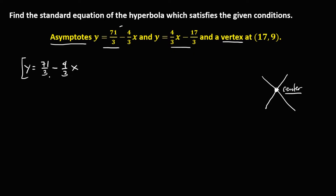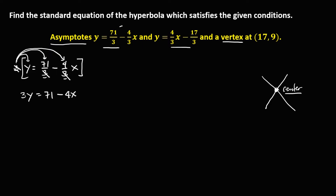We need to simplify. Since the denominators are 3, we multiply the whole equation by 3. Distributing: 3 times y is 3y, equals 3 times 71 over 3 — we can cancel the 3 — so that's 71. Then to this term, we cancel the 3, giving us negative 4x. So this is our first equation: 3y equals 71 minus 4x.